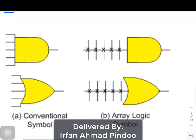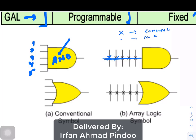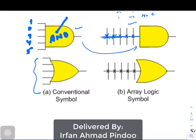Now focus on this diagram. This is the normal way — suppose we have an AND gate with multiple inputs: input number 1, 2, 3, 4, and 5. We can also represent the same with a single line. Wherever there is a connection, there will be a cross, and that cross indicates a connection. If there is no cross, that indicates no connection. Similarly for the OR array, multiple lines are represented with only a single line, and crosses indicate how many inputs are given.